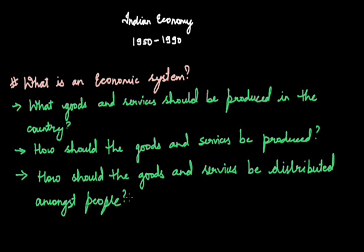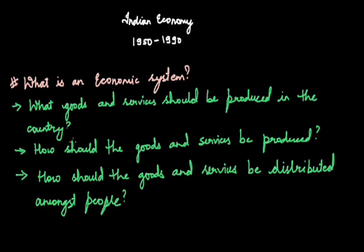To answer the first question — what goods and services should be produced in the country — we need to identify whether we are in need of basic goods and services or luxury goods and services. The kind of goods a country produces defines the type of economy it has. For example, in India, the majority of goods and services produced fulfill the basic needs of the people: food, transportation, and such basic services. On the other hand, if you take Switzerland, they are aware that the economy runs basically on tourism, so the goods and services available there are produced to fulfill that respective requirement.